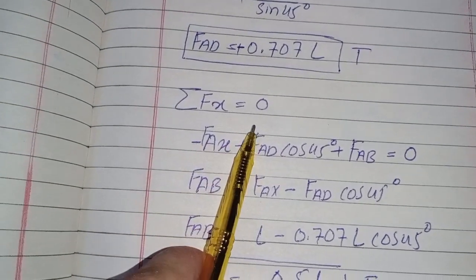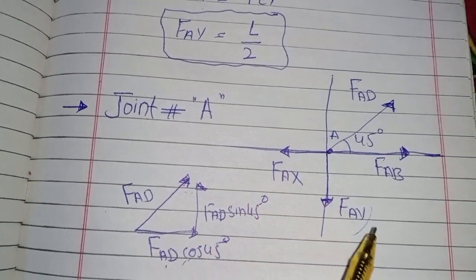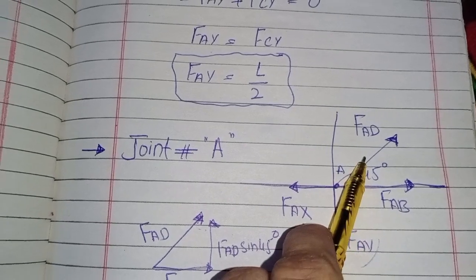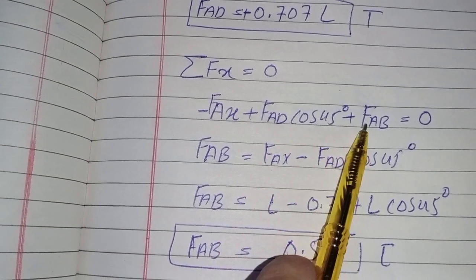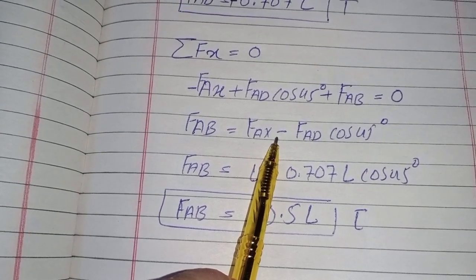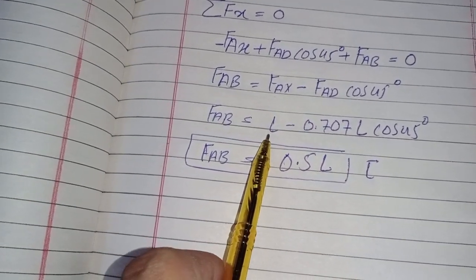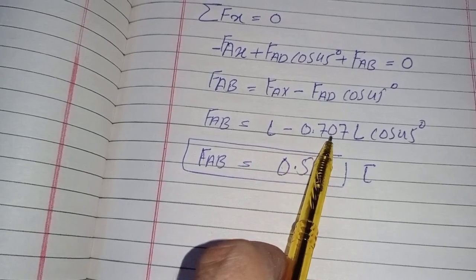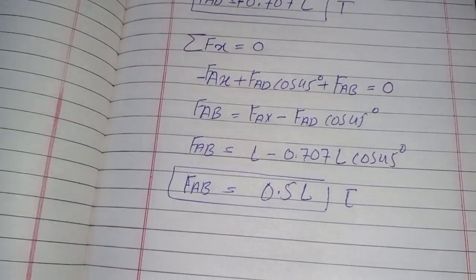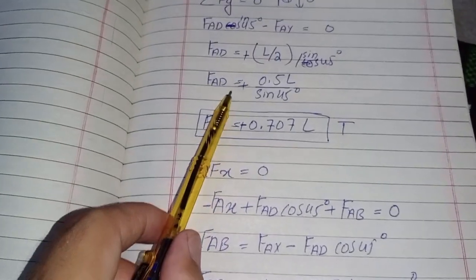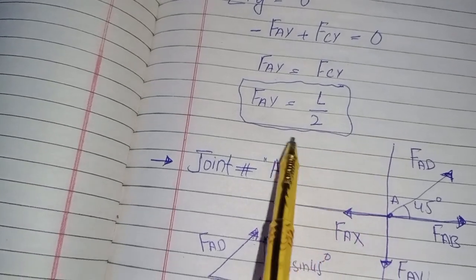Now taking summation of forces in the x-direction equal to zero: negative F_ax plus F_AB plus F_AD cos45° equals zero. So F_AB equals F_ax minus F_AD cos45°. We know F_ax equals L, and F_AD cos45° equals 0.707L times cos45°, so when solved, F_AB equals 0.5L.